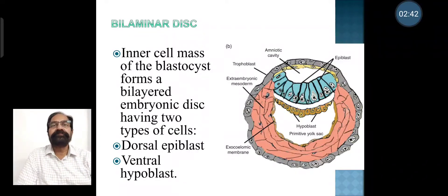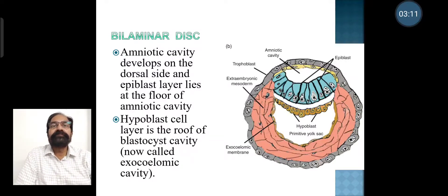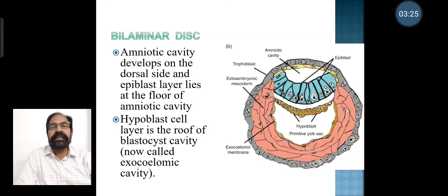The inner cell mass of the blastocyst forms a bilayered embryonic disc having two types of cells: the dorsal one is epiblast and the ventral one is hypoblast. The amniotic cavity develops on the dorsal side and the epiblast layer lies at the floor of the amniotic cavity. As you can see in the picture, the hypoblast cells layer is the roof of the blastocyst cavity, now called the exocoelomic cavity.